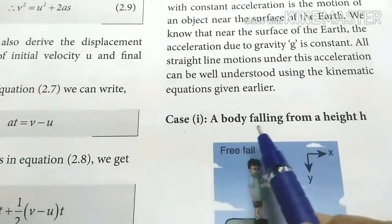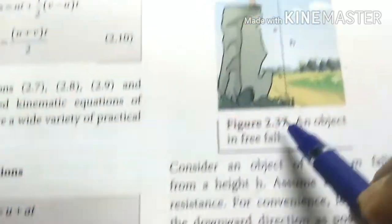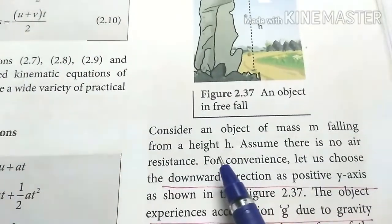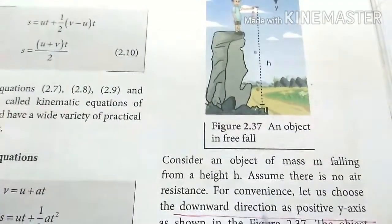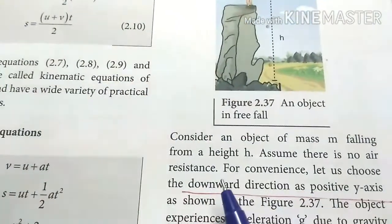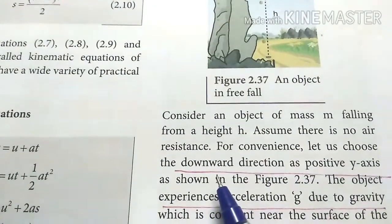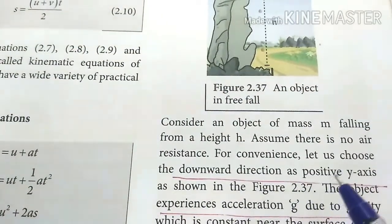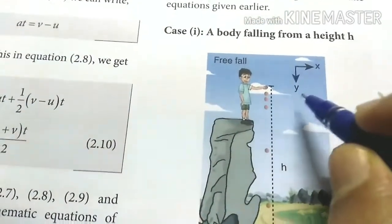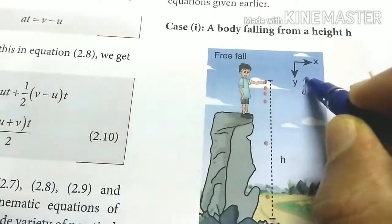Case 1: a particle falling from a height h. Consider an object of mass m falling from a certain height. Let us choose the downward direction as the positive y-axis. Then the downward direction is represented by the unit vector j-cap.